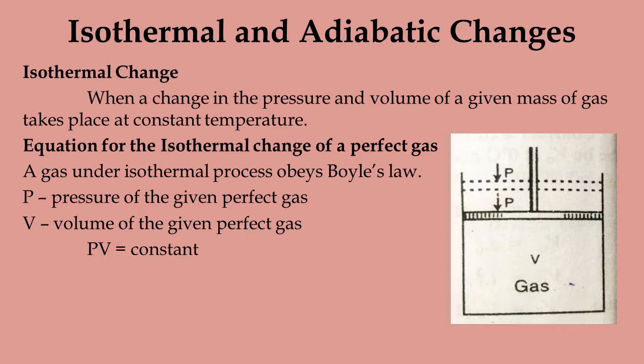The equation for the isothermal change of a perfect gas: a gas under an isothermal process obeys Boyle's law. Let P and V be the pressure and volume of a given mass of a perfect gas undergoing isothermal changes. The isothermal change is represented by the equation PV = constant.